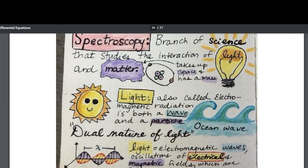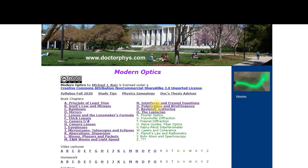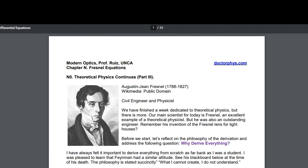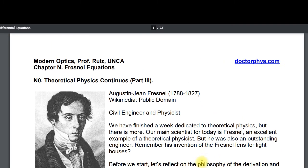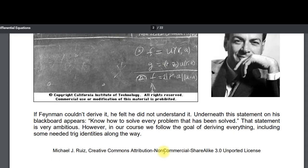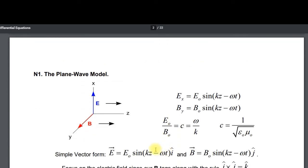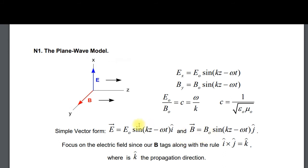That brings us to the last section. There's a little philosophy at the beginning we can skip. The plane wave model — we should know these equations and remember V = ω/k. E₀ and B₀: E is larger in order of magnitude. B₀ = E₀/c. The basic formula is V = ω/k, or c = ω/k.